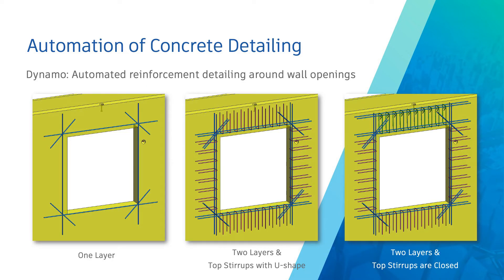Here I have some examples of Dynamo usage — three sets of reinforcements generated around a window opening. These different ways of reinforcement for a window opening were created using one script. Rebars are generated in various configurations based on the selected input parameters. This is just one of many examples of possible usage of Dynamo in a concrete detailing context.